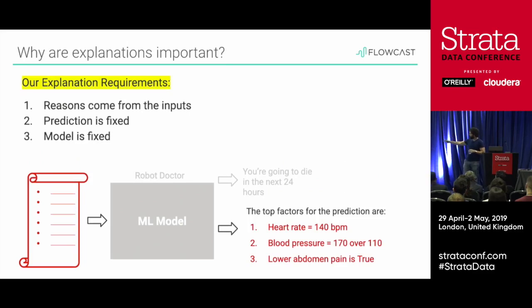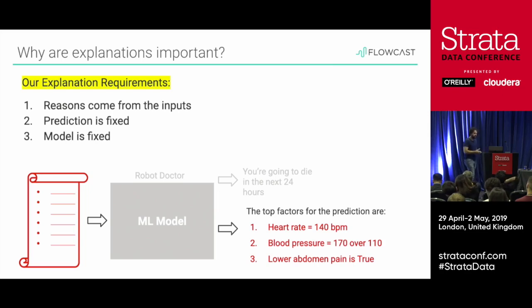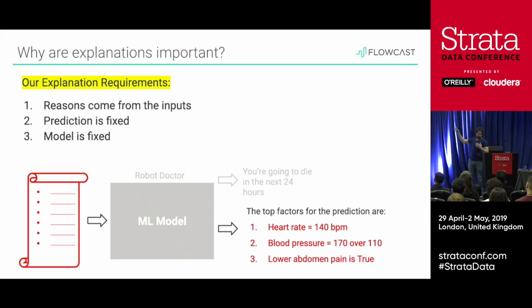Beyond that, the prediction is fixed and the model is fixed. We're trying to explain models that already exist — they're already in production, maybe they're highly complex, very performant, making millions of dollars. We don't want to mess around with the model or train a new model. We want to be explaining existing models in production. The model is fixed and the prediction is fixed.